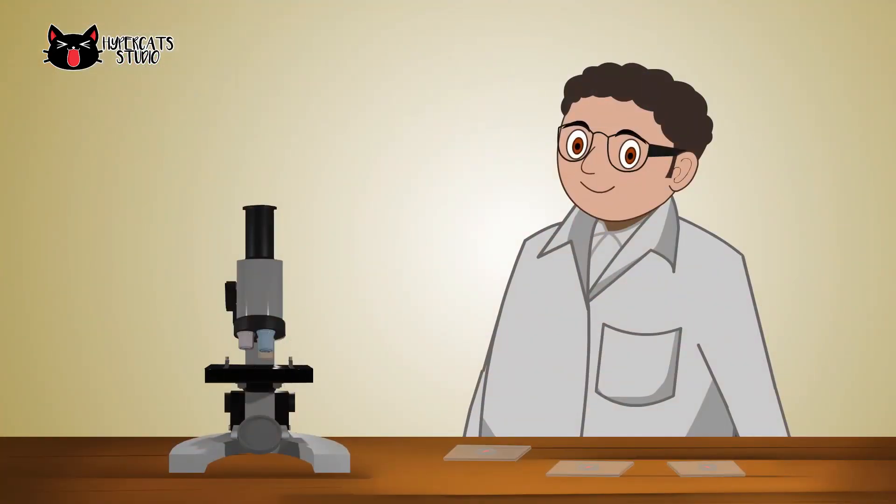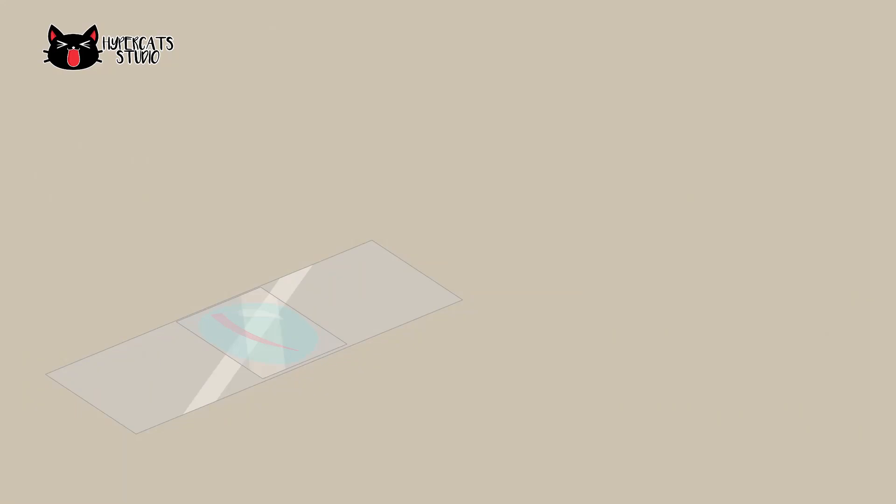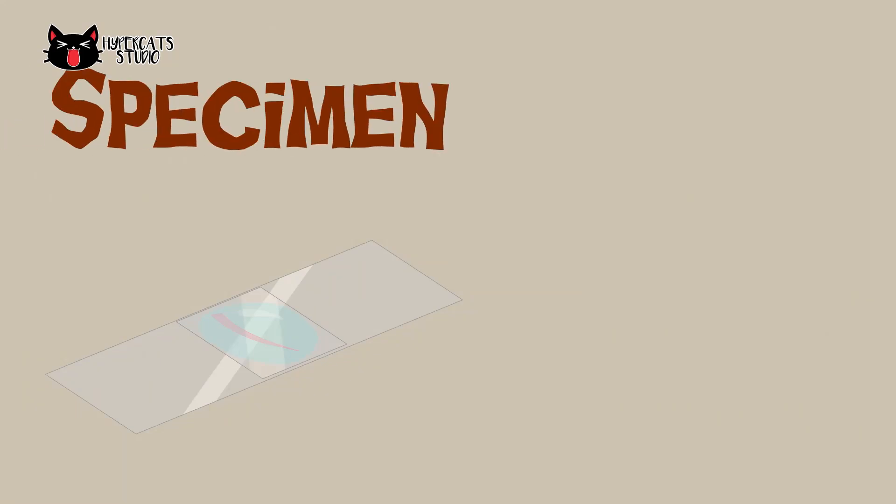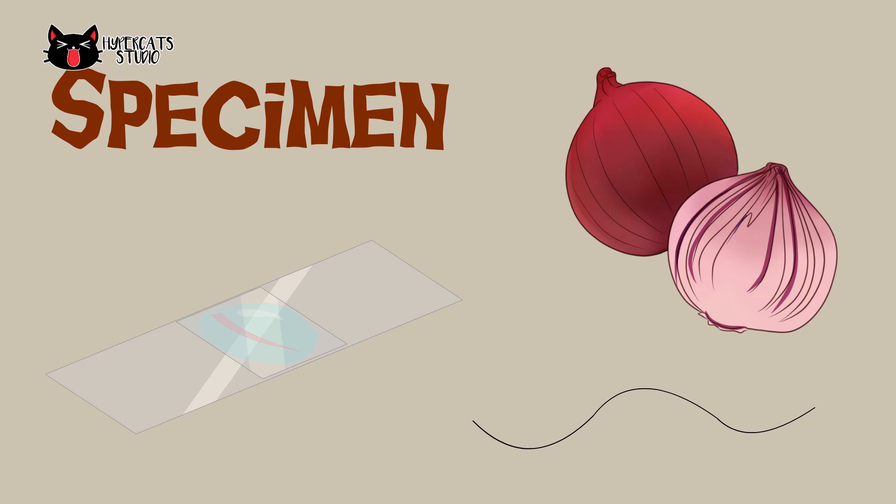Like biologists, we have to have a specimen to observe under a microscope. A specimen is anything that we want to study. It can be found anywhere, like allium cepa or onion and our hair.